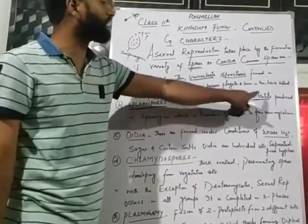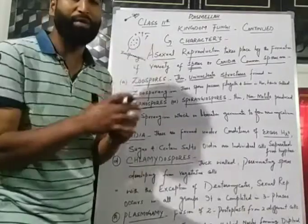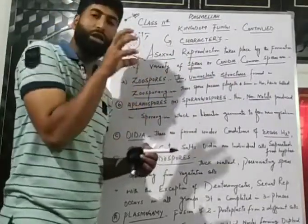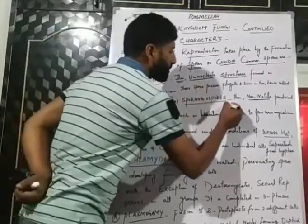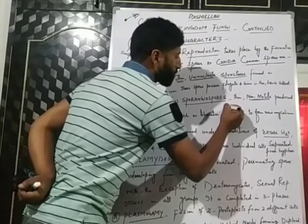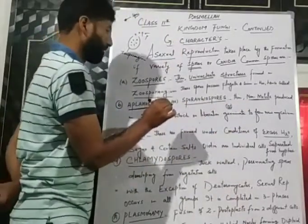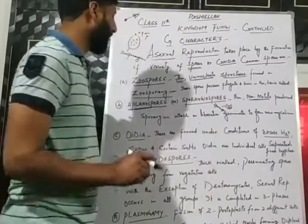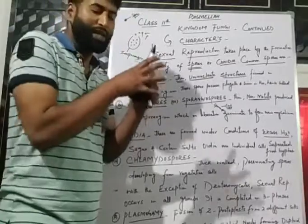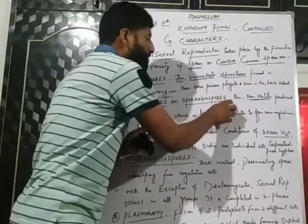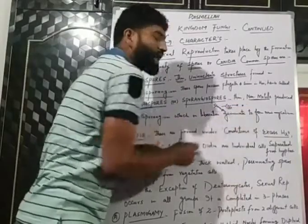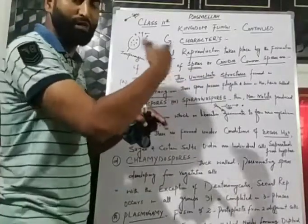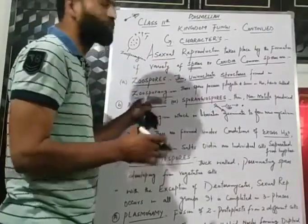Aplanospores are thin, non-motile spores produced in a sporangium. This sac-like structure is called the sporangium. Upon liberation, these spores germinate to form new mycelium — new fungi develop. Aplanospores are non-motile, whereas zoospores are motile.